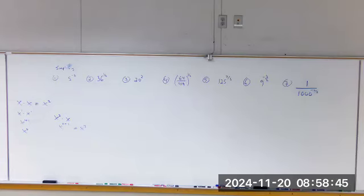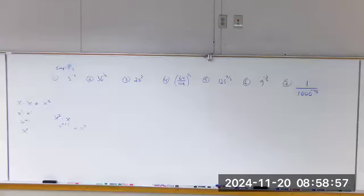Number seven: anything to the zero power is always one. Everybody has the same disease — they say zero. Everything to the zero is always one, except zero. A to the zero is equal to one, provided a does not equal zero, and it won't for us.